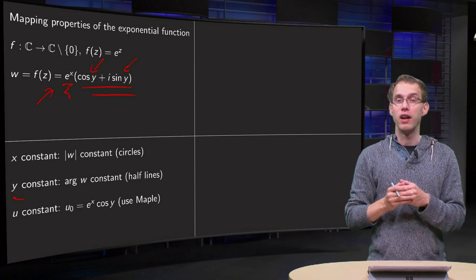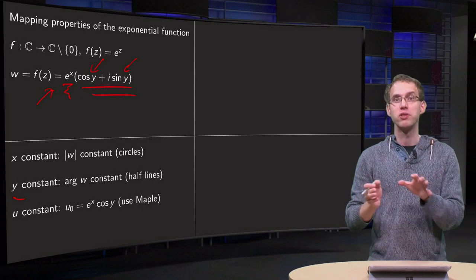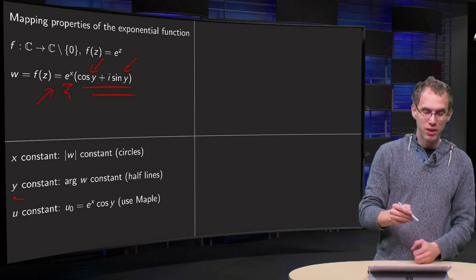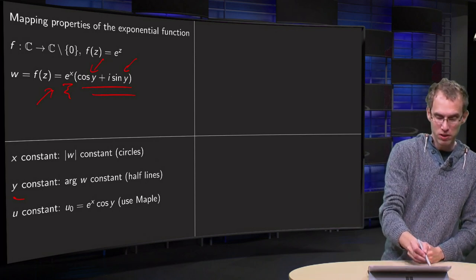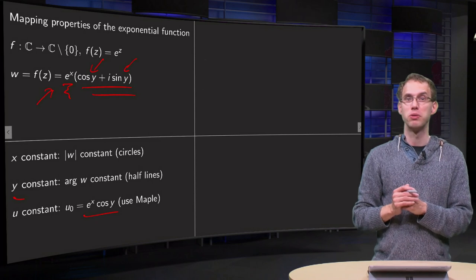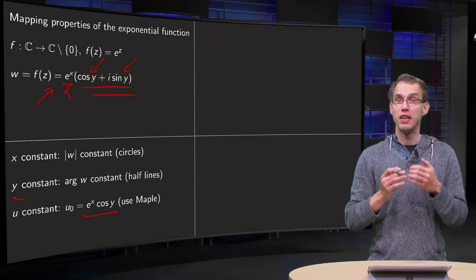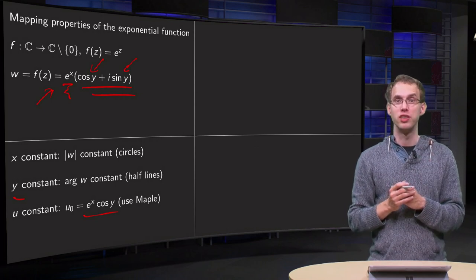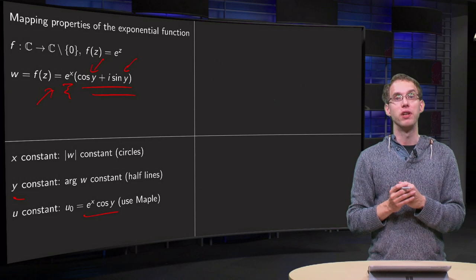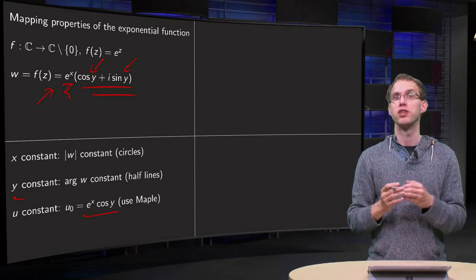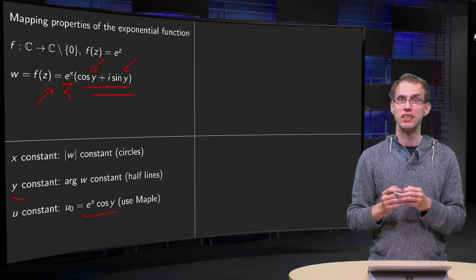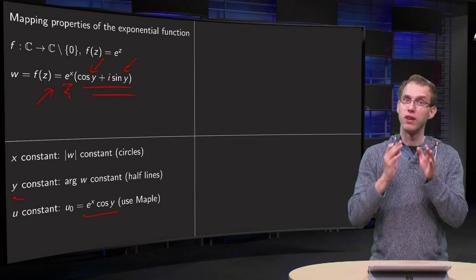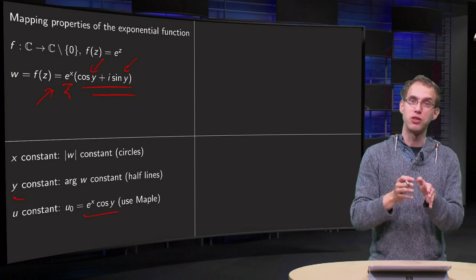If you would try it the other way around, so what about u constant and v constant? Well if you would set u constant, you get u = u0 = e^x cos y in the x-y plane. Well that's awkward, that's a difficult curve to sketch. You can use a computer algebra system like Maple to make sketches like this; we cannot do that easily by hand. So we will only do the curves in the uv plane where x is constant and y is constant.